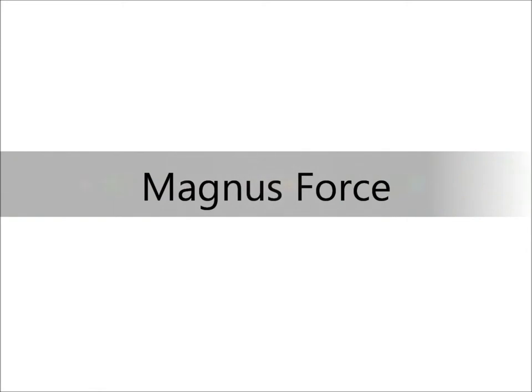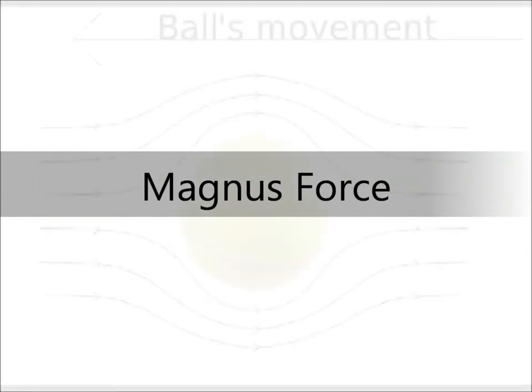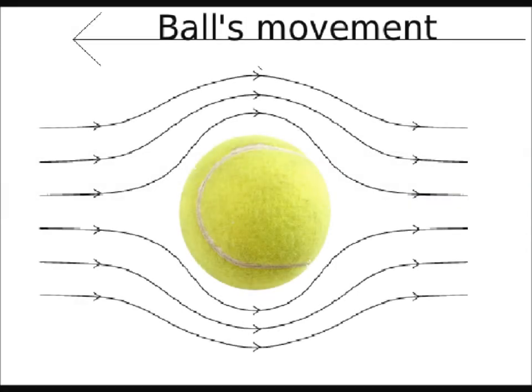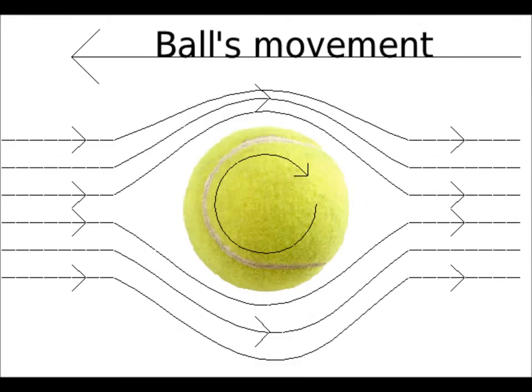The next principle we will look at is Magnus force. When a ball is hit without spin, air is moving past the ball at the same velocity all around the ball. But when the ball spins, the surface of the ball affects the movement of air around it due to surface drag.